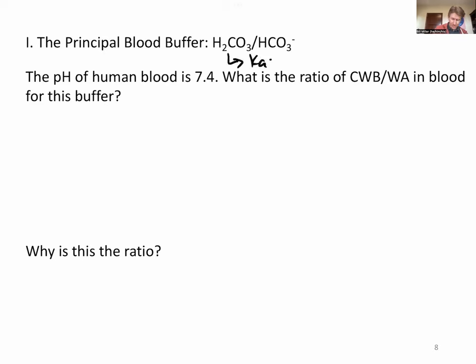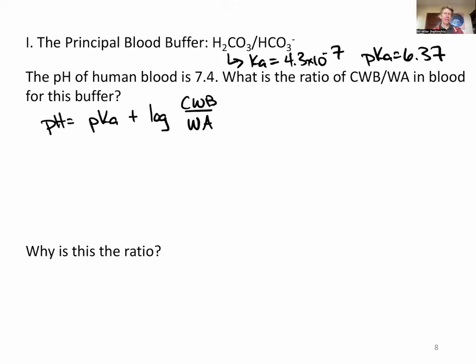So let's start by looking up the Ka value for carbonic acid. That's going to be 4.3 times 10 to the minus 7. And pKa for that, 4.3 exponent 7 minus, on my calculator log, I get 6.37. And in a calculation very similar to what we did on the previous slide, we're going to say that pH equals pKa plus the log of conjugate weak base to weak acid. It could be moles, it could be molarity as well.